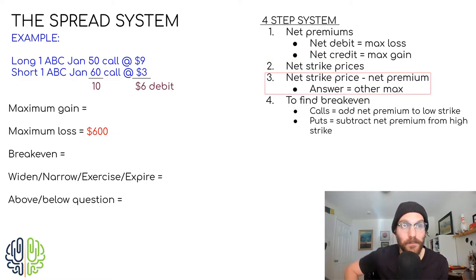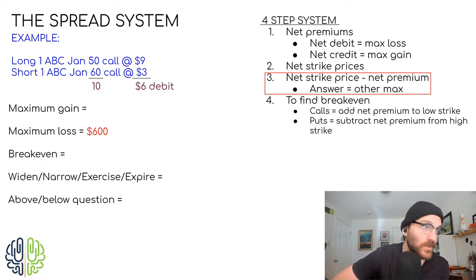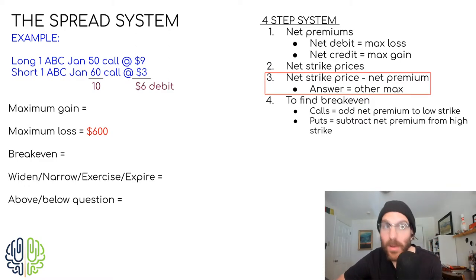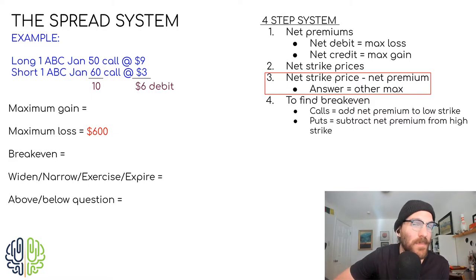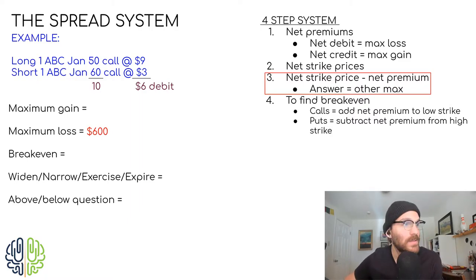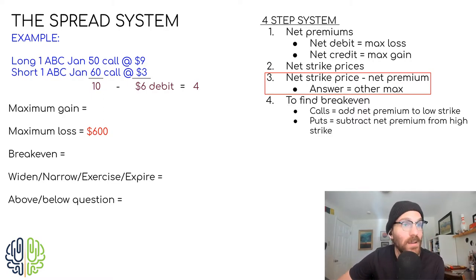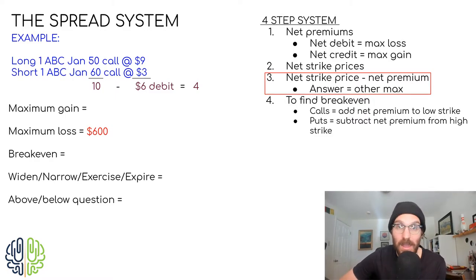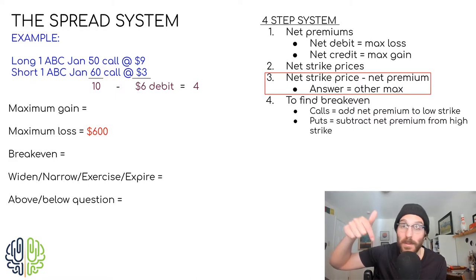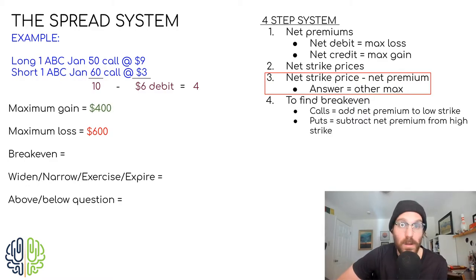For step three, we're going to take that net strike price difference — which for us was 10 — and subtract out the original net premium. Try not to think about either of these as positive or negative numbers; we're just figuring out the difference between 10 and 6, and that's 4. Whatever we get here will answer whatever the other max is. We figured out max loss in step one, so step three tells us maximum gain, which would be $400. And vice versa — if we found the maximum gain up front, step three would tell us the maximum loss.